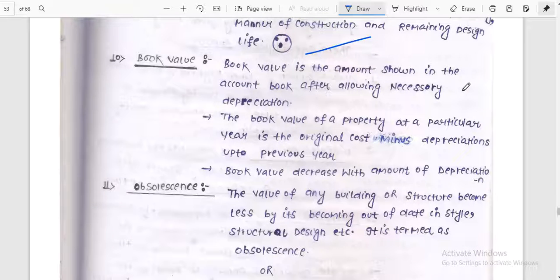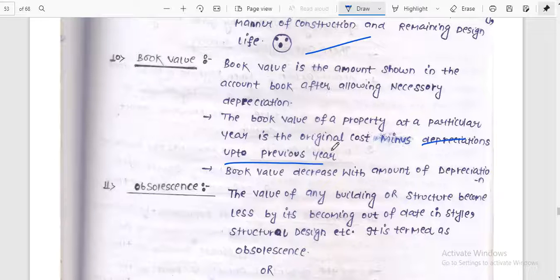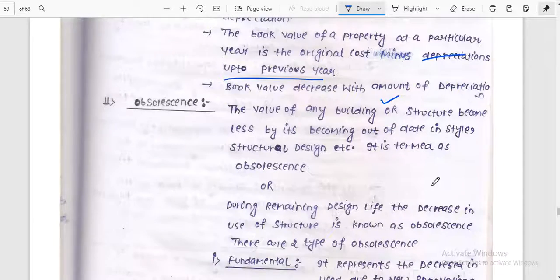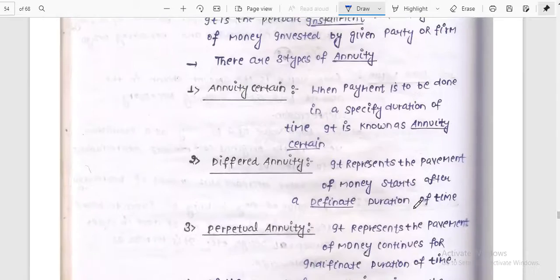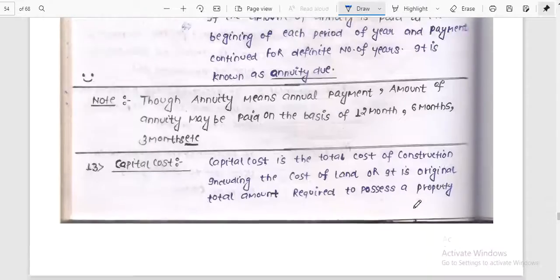Book value. Book value is the amount shown in the account book after allowing necessary depreciation. The book value of a property in a particular year is the original cost minus depreciation up to previous year. Book value decreases with amount of depreciation. Depreciation is given by the book value.